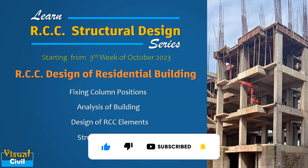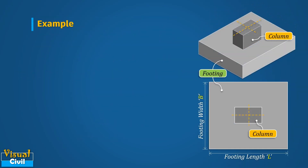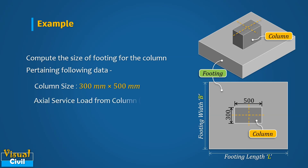Now let us move to our topic and understand the computation of footing size with an illustrative example. Here we will compute the size of footing for a column of 300 mm by 300 mm size. The axial service load from the column is 1500 kilo-newton, and the safe bearing capacity of soil at the site is 185 kilo-newton per meter square.